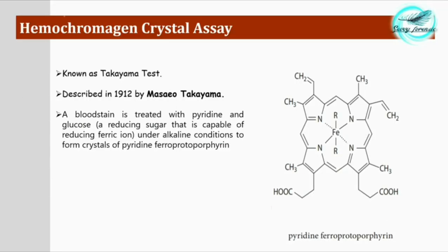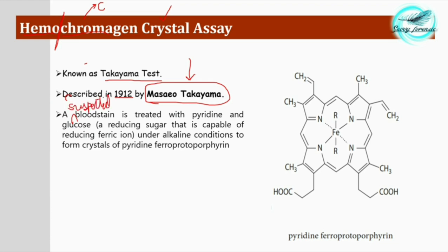Let's understand the term hemochromogen: 'hemo' means heme, and 'chroma' means color, so the product is a heme derivative crystal that imparts a certain color. The hemochromogen crystal assay, or Takayama test, was described in 1912 by Masao Takayama. In this test, the suspected blood stain is treated with pyridine and glucose (a reducing sugar) under alkaline conditions to form crystals of pyridine ferro protoporphyrin.